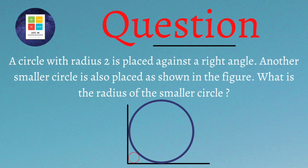The question is as follows: a circle with radius 2 is placed against a right angle. Another smaller circle is also placed as shown in the adjoining figure. What is the radius of the smaller circle? We are provided four options: Option A: 3 minus 2 root 2; Option B: 4 minus 2 root 2; Option C: 7 minus 4 root 2; Option D: 6 minus 4 root 2.